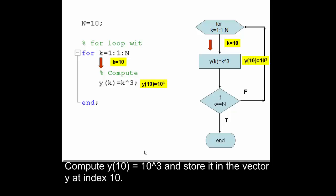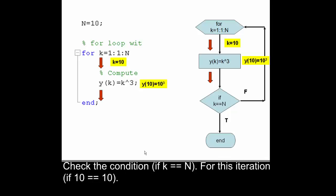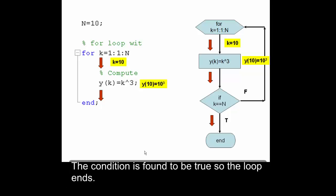Compute y(10) equals 10 cubed and store it in the vector y at index 10. Check the condition if k equals n. For this iteration, if 10 equals 10, the condition is found to be true so the loop ends.